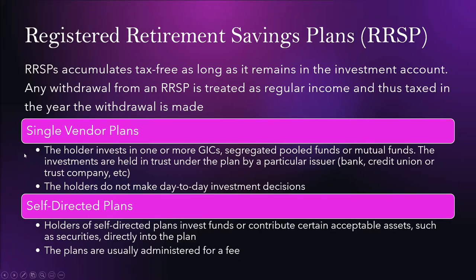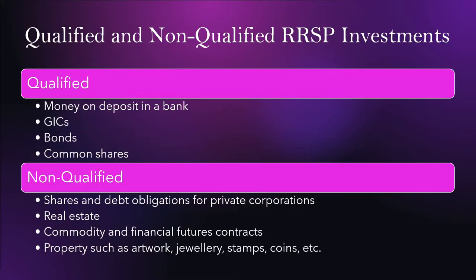With RRSPs you have single vendor plans and self-directed plans. In a single vendor plan, the holder invests in one or more securities and the investments are held in trust by a particular issuer, with the holder not making day-to-day investment decisions. In self-directed plans, holders contribute acceptable assets themselves, and the plans are usually administered for a fee. Qualified RRSP investments are securities or financial investments, whereas non-qualified are physical items such as real estate, commodities, property, and shares or debt obligations of private corporations.